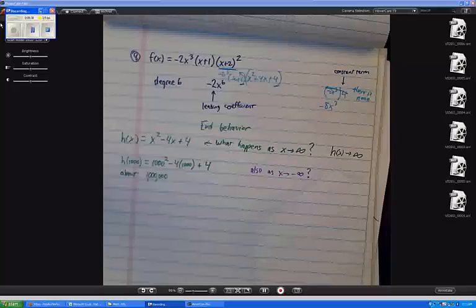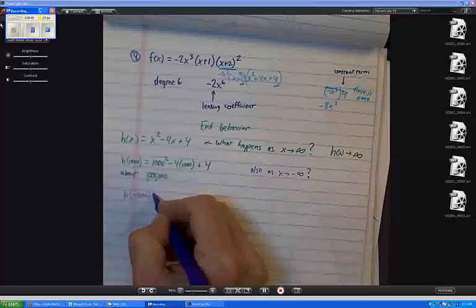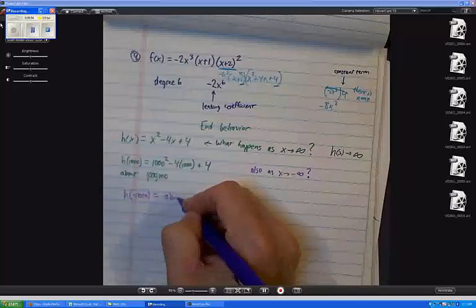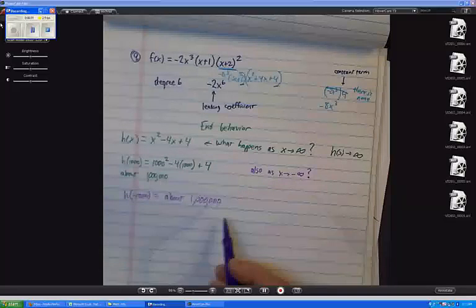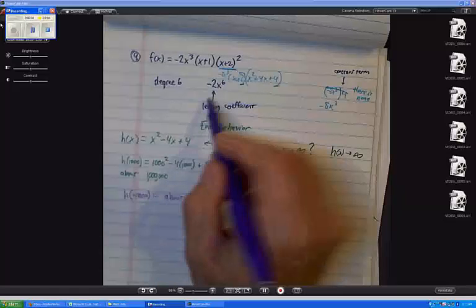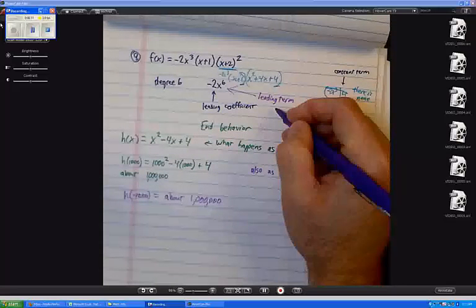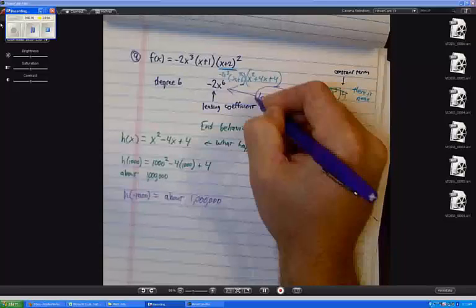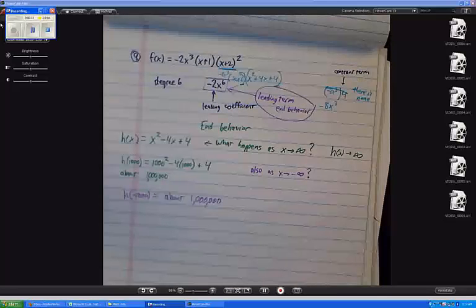What about as x approaches negative infinity? Well, now I'm putting in a very negative number. Something like h of negative 1,000. What's that going to be? About what? Would you agree it's about positive a million? Why? Well, because the only term that really matters is the leading term. The leading term is going to tell me about end behavior. The leading term. And that's one of the reasons they wanted me to find it. The constant term isn't going to affect end behavior very much. It's still going to be about a million. Are you with me?